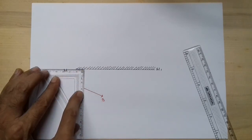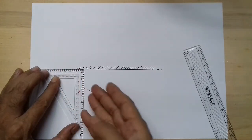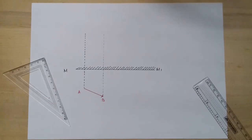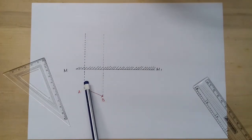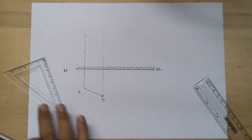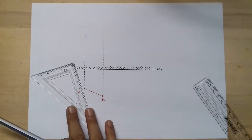We will use this set square and draw the perpendicular we have learned in that video. I have drawn two perpendiculars from this point and from that point by using the set square.